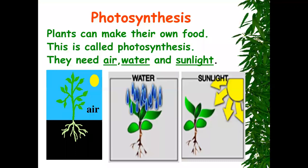The things that a plant needs are air, water and sunlight. And with the help of these three things, a plant can make food for itself. And this process is called photosynthesis.